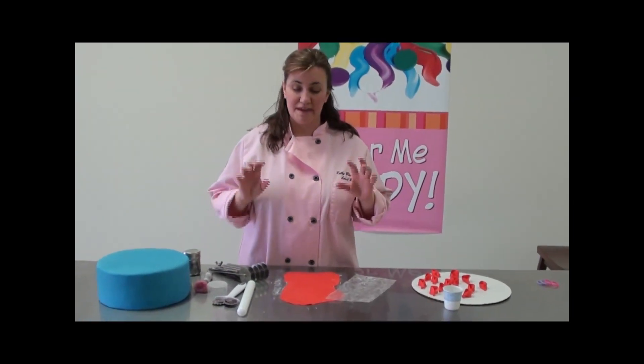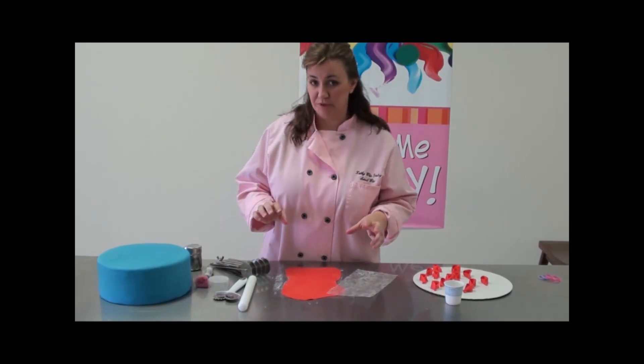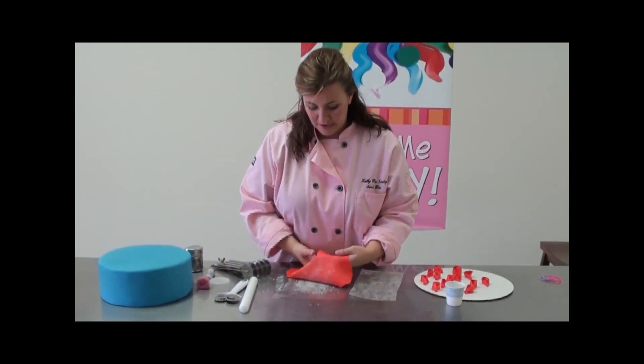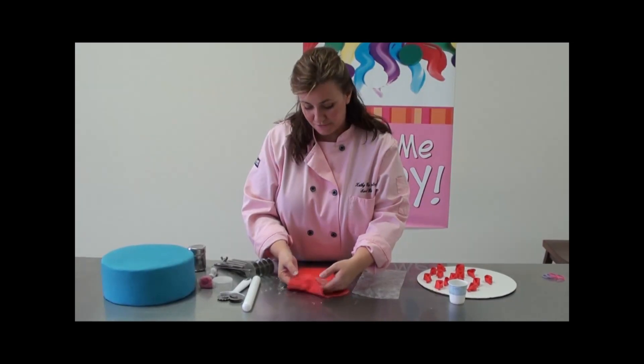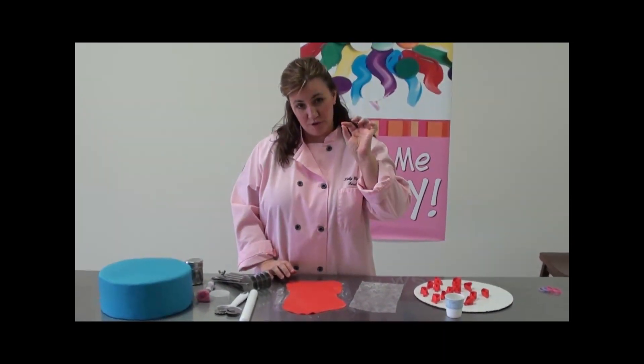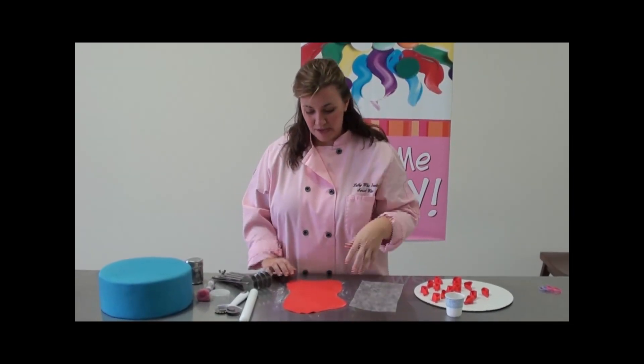This is the multi-loop bow. You can make it super quick. It's super easy to make, and you definitely want to use gum paste when you make it. You can roll it a lot thinner than you can fondant, and the Tylose will help the loops actually dry more quickly and really hold their shape nicely. So let's do this.